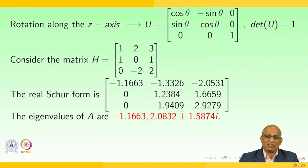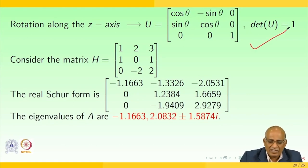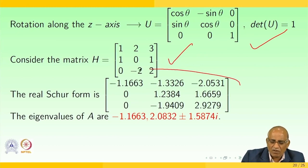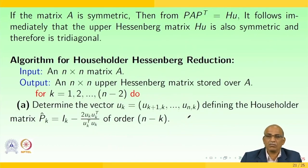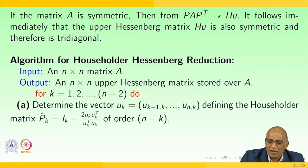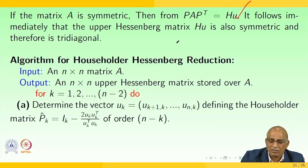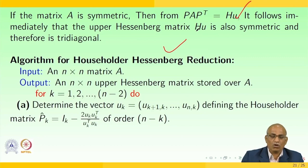Rotation along the z-axis gives a specific rotation matrix. If you take the matrix H, the real Schur form has eigenvalues — one real eigenvalue and complex eigenvalues. If the matrix A is symmetric, then PAP transpose = HU, and it follows that the upper Hessenberg form of a symmetric matrix is also symmetric, therefore is tridiagonal.